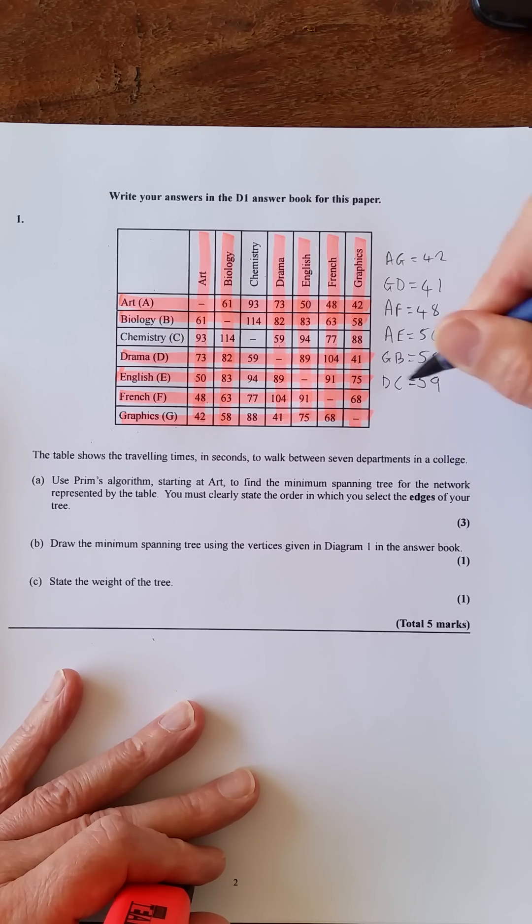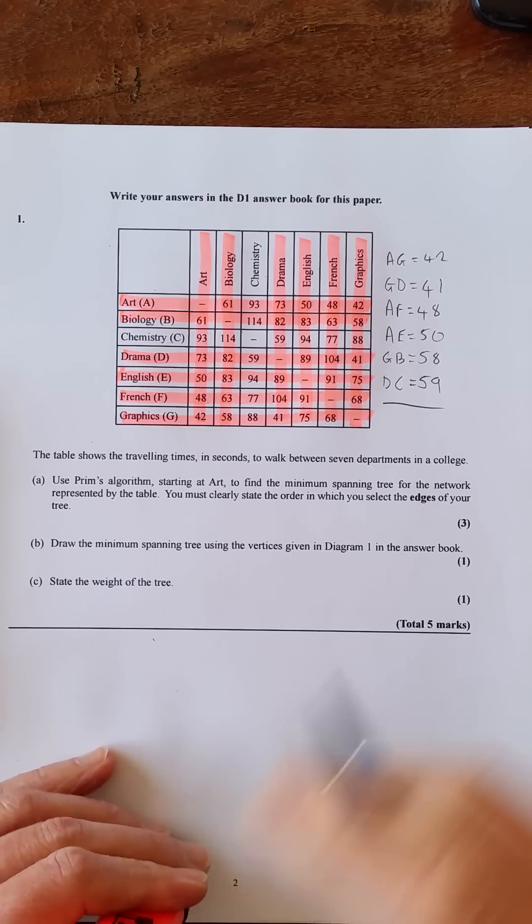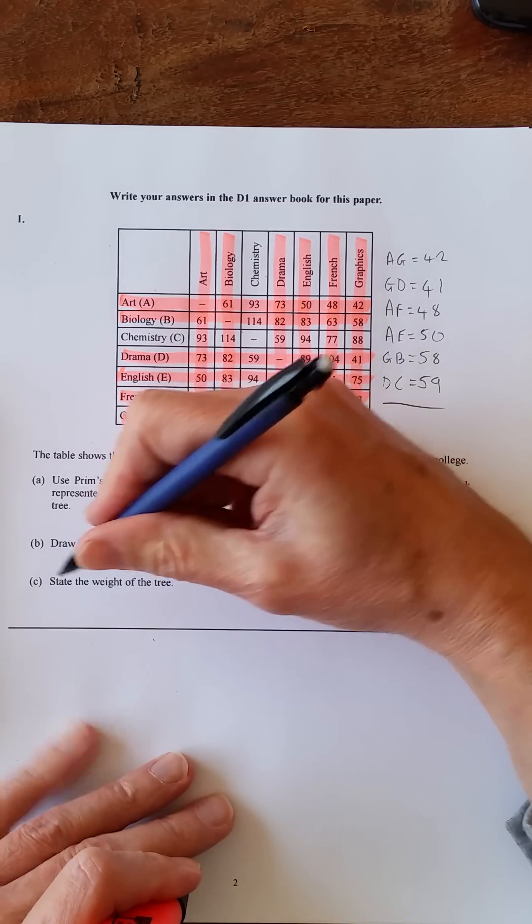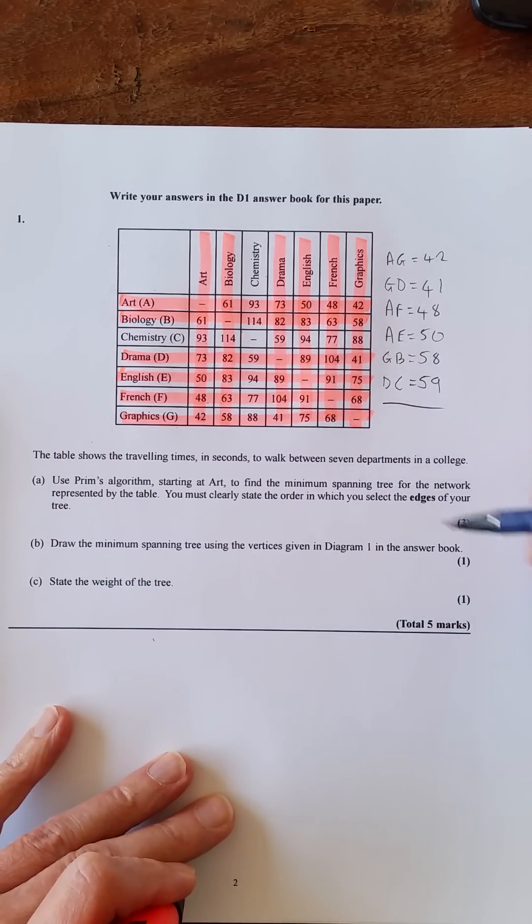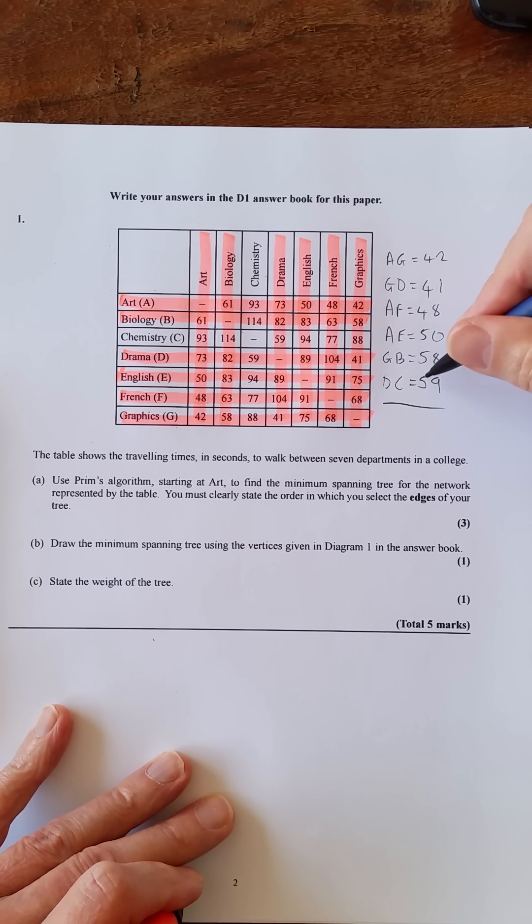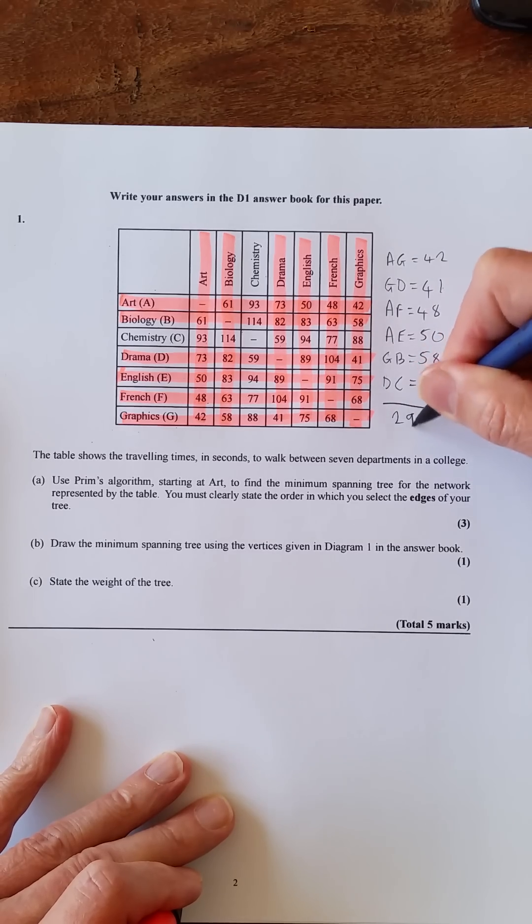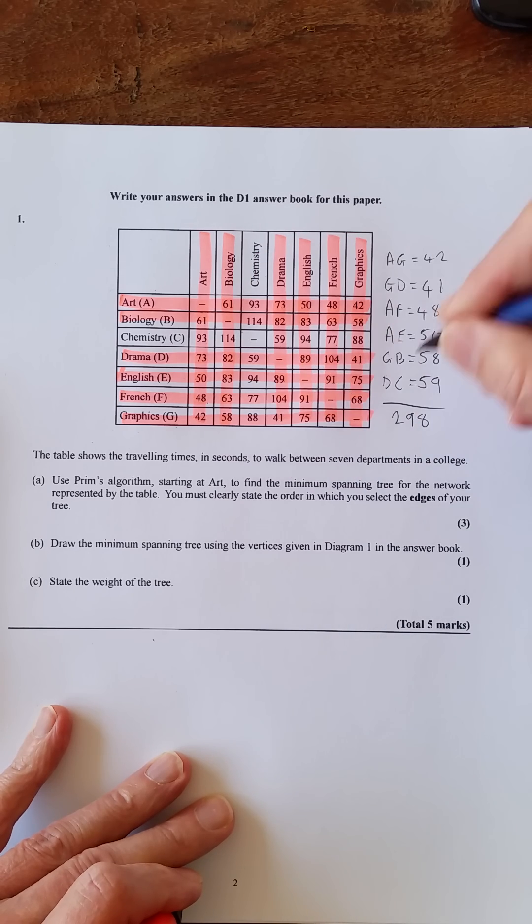Okay, let's while we're on, we might as well do part C here. So part C state the weight of the tree. So let's just add these up: 50, 100, 150, 190, 230, 270 and 10, 280, 282, 16, 296, 298, and it is 298 seconds.